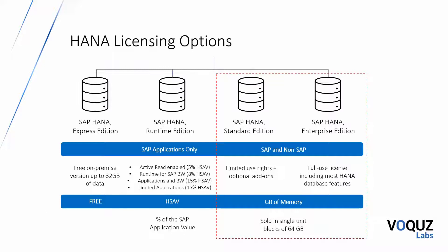For SAP HANA Standard Edition and SAP HANA Enterprise Edition, these are both full use license versions and you can deploy both SAP and non-SAP applications on the database. The Standard Edition is a limited use rights license which includes optional add-ons, and the Enterprise Edition is a full use license which includes most of the HANA database features available on the price list. Both are sold on a metric of gigabytes of memory, sold in single unit blocks of 64 gigabytes.